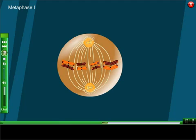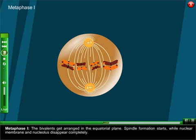Metaphase one: The bivalents get arranged in the equatorial plane. Spindle formation starts while nuclear membrane and nucleolus disappear completely.